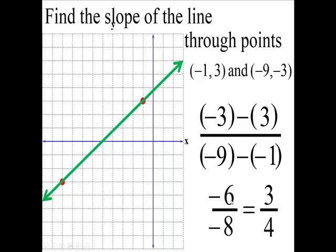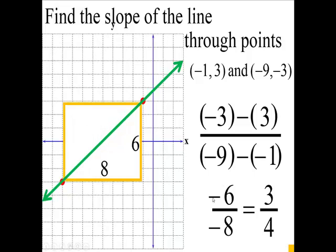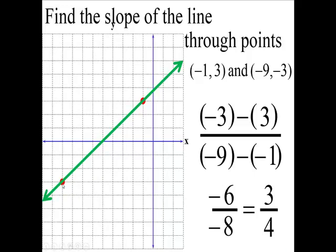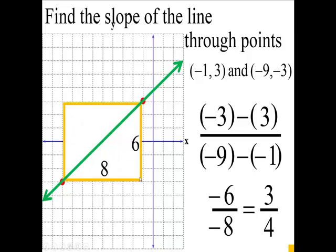Now you look, you had 6 over 8, didn't you? So as you go from this point here to this point, if I draw a rectangle through those two points, this is 6 high here and 8 this way. So you see where the 6 and the 8 are coming from.